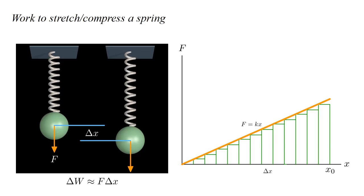If we were to stretch the spring from x equals zero to x equals x₀, the total work done would be approximately the sum of the areas of all the green rectangles. This is approximately the area of the orange triangle, and the approximation gets better the smaller delta x is. Letting delta x become infinitesimally small and using the formula for a triangle's area, we find the total work w is one-half the base x₀ times the height kx₀, or one-half k x₀².